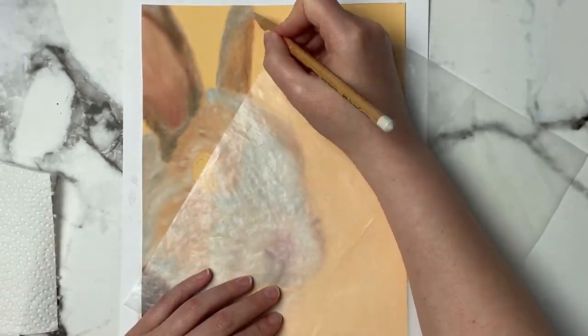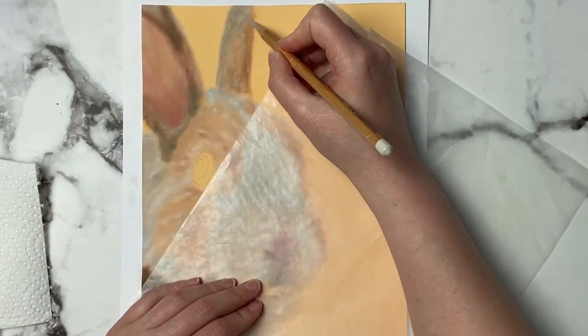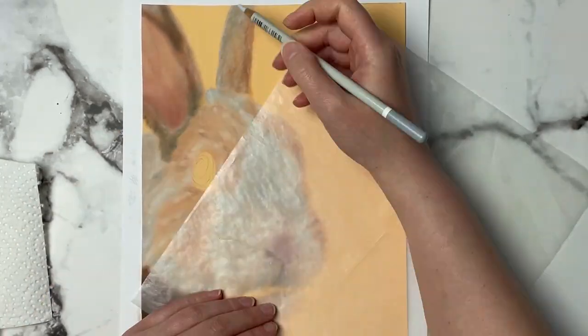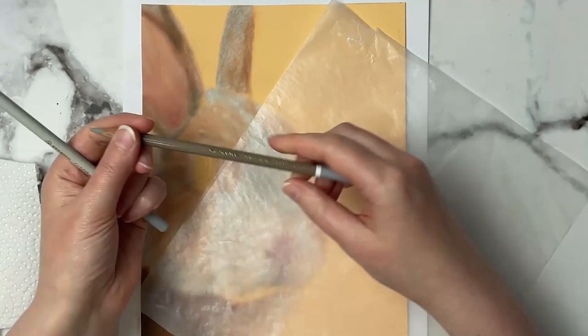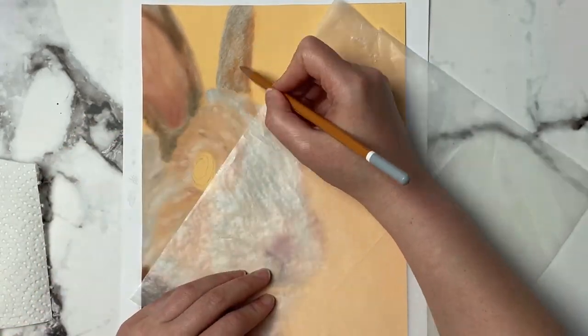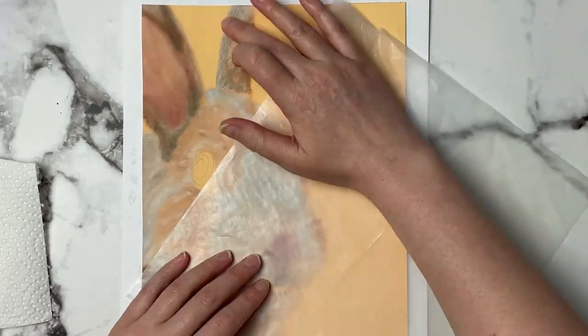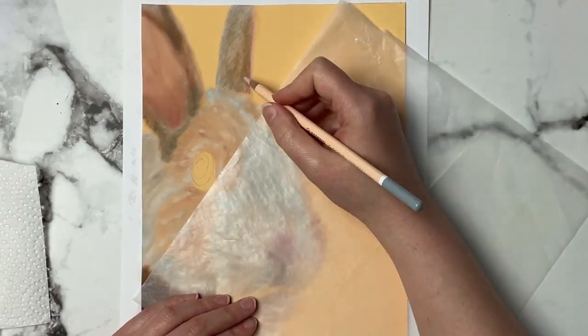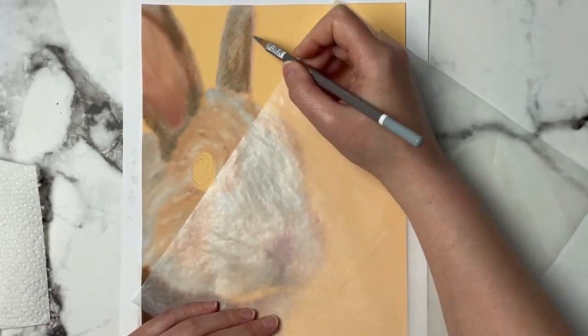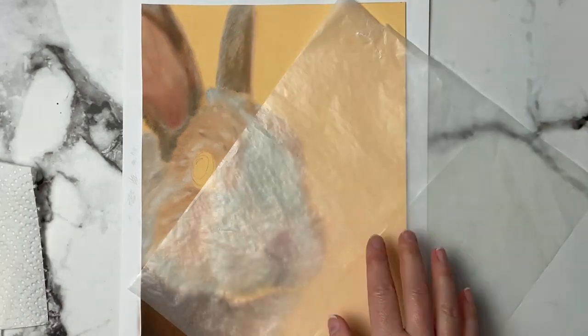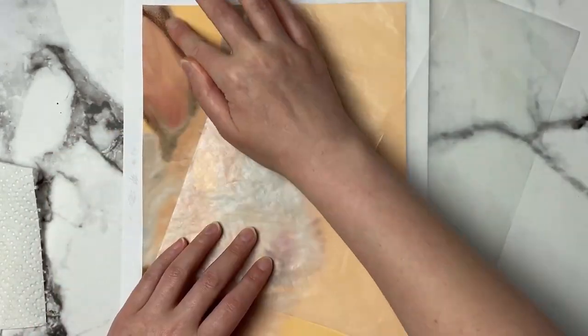Now once we're done with our base layer it's time to go in and start rendering our fur details. Now with this bunny I really love this photo because we've got some areas that are a little bit out of focus and then some areas that are more in focus. That's going to make him look a little bit more detailed as well because you're going to have some blurry areas against more detailed areas that's going to make him really pop.